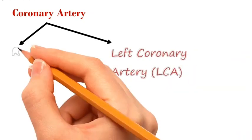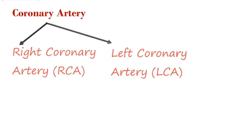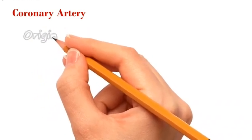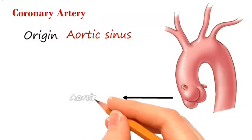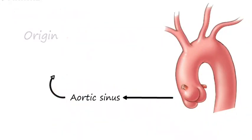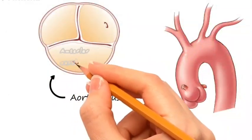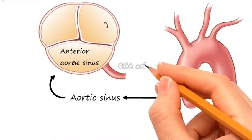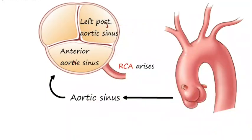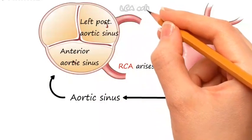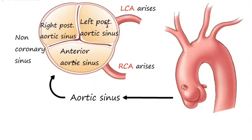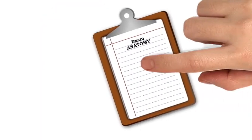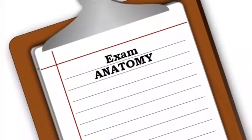There are two coronary arteries: the right coronary artery and the left coronary artery. Both coronary arteries arise from the aortic sinus. There are three aortic sinuses — from the anterior aortic sinus the right coronary artery arises, from the left posterior aortic sinus the left coronary artery arises, and there are no coronary arteries from the right posterior aortic sinus, hence the name non-coronary sinus.